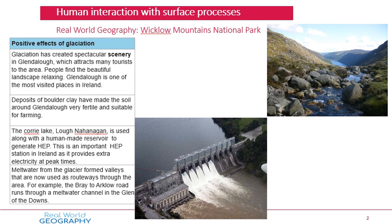The third positive is the corrie lake. A lake formed by glaciation is called a corrie, and Loch Nahangan is used as a human-made reservoir to generate hydroelectric power. Think back to the Poulaphouca Dam in County Wicklow covered a few weeks ago - similarly, this dam provides electricity to places like Dublin. As water flows through it, it spins turbines and generates electricity.